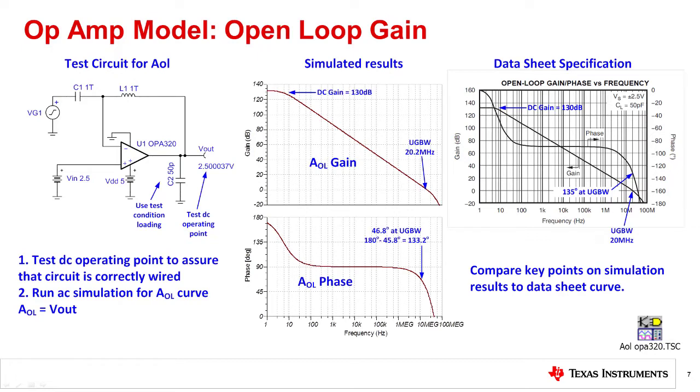First, for this test, the amplifier needs to be in the linear operating range. So in this case, the input signal is set to 2.5 volts to make sure that the output is at mid-scale and not driving into a rail.